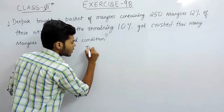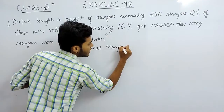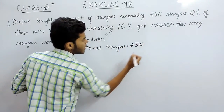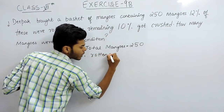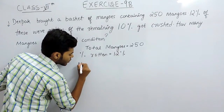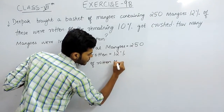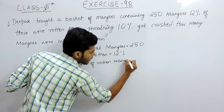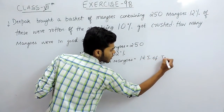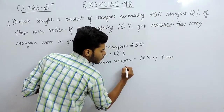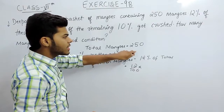Total mangoes equals 250. Percent rotten equals 12%. The number of rotten mangoes will be equal to 12% of total, so it will be 12 divided by 100 multiplied by 250.